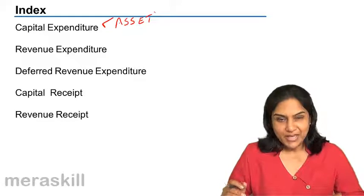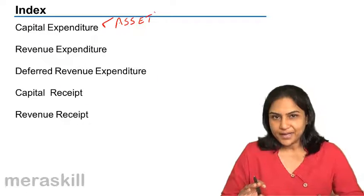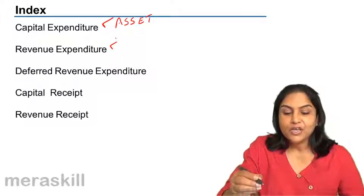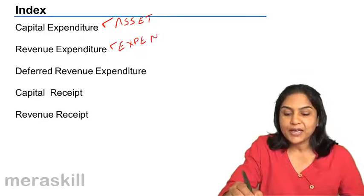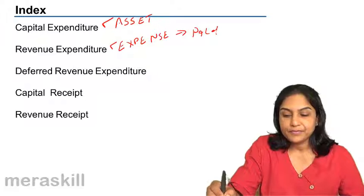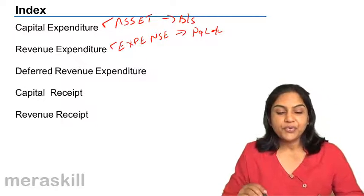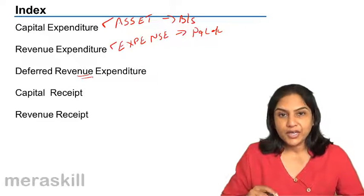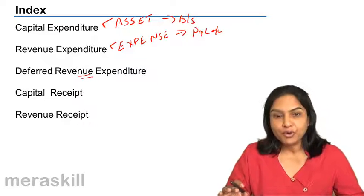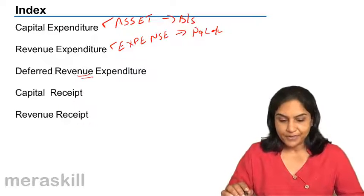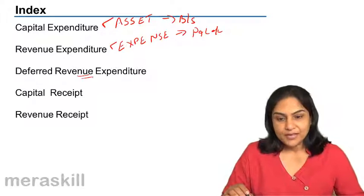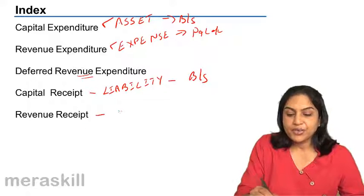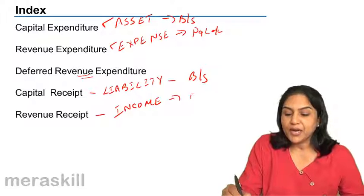When we discuss further and take up some examples, you will understand why that confusion could be there. After understanding capital expenditure, we will move on to what is revenue expenditure, which is an expense taken to the profit and loss account, while assets are taken to the balance sheet. Thereafter, we will discuss deferred revenue expenditure, which is actually an expenditure that is revenue in nature, but because of the huge amount involved, it is treated partly like an asset. Then we will understand what is a capital receipt, which is normally treated as a liability and taken to the balance sheet, and a revenue receipt, which is like an income and taken to the profit and loss account.